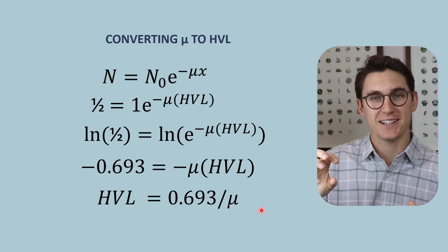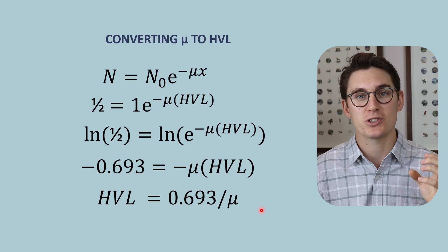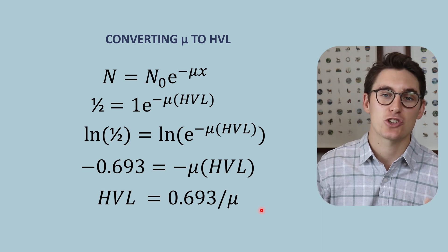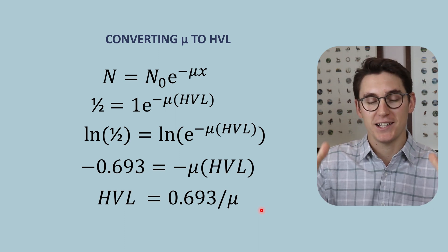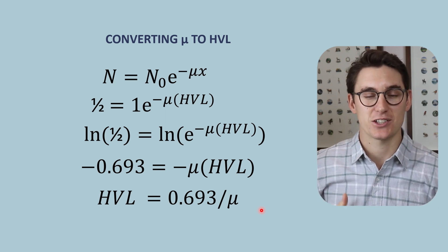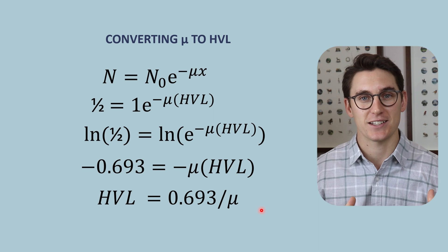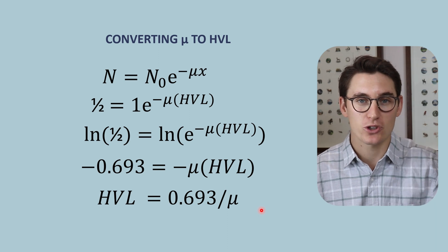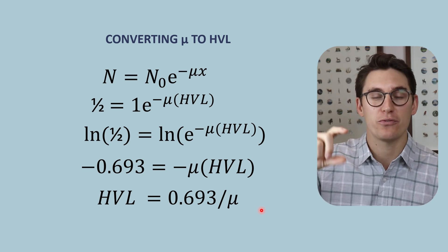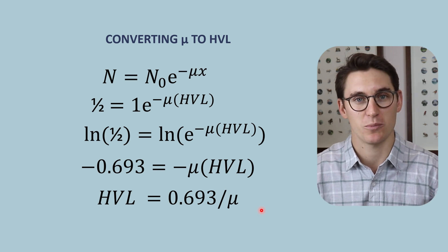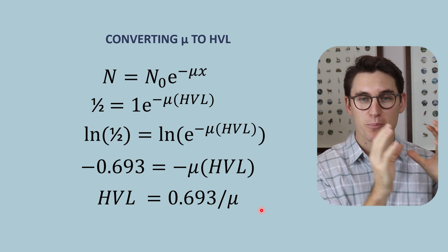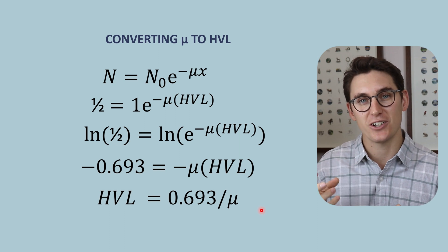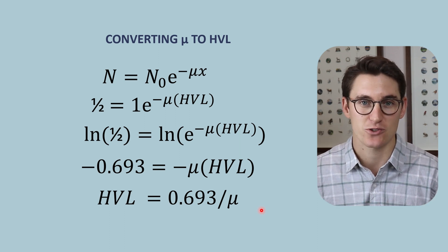When calculating the linear attenuation coefficient and the half value layer, we use three parameters: x-ray beam energy, material density, and the atomic number of our material. When dealing with one patient as a whole, the density and atomic number of the patient's tissue thickness haven't changed. So as we change our photon energy, the half value layer will change in proportion to x-ray beam quality. We can use HVL as a proxy for beam quality, and the linear attenuation coefficient to assess how well specific tissues attenuate an x-ray beam.